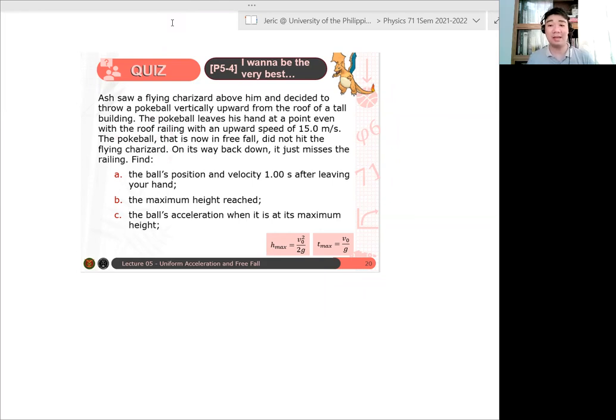The Pokeball leaves his hand at a point even with the roof with an upward speed of 15 meters per second. The Pokeball that is now in free fall did not hit the flying Charizard. On its way back down, it just misses the railing.